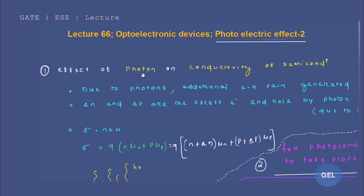What we are going to look at in this video lecture is the effect of photons on the conductivity of a semiconductor. If photons are applied on a semiconductor, we are going to study how the conductivity property of the semiconductor will vary by the application of photons.